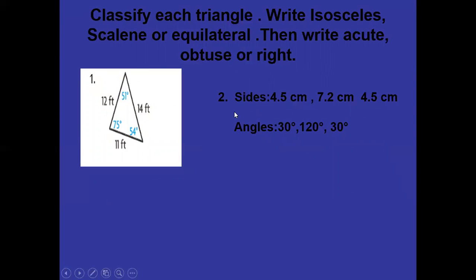The second example has two sides of the same length — 4.5 and 4.5 — and a third side of 7.2, so based on sides it is an isosceles triangle. Based on angles, there is a 120-degree angle and the other two are 30 and 30, so it is an obtuse triangle. You name it as isosceles obtuse. In the assignments, you will be asked to name triangles in two ways: based on sides and based on angles.